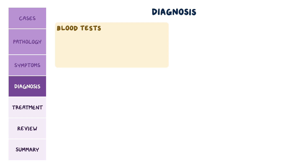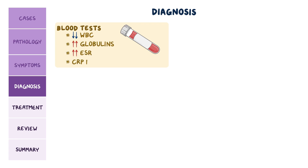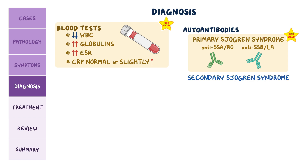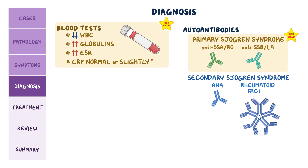Blood tests are also needed for diagnosis. In Sjogren's syndrome, there's often a low white blood cell count, elevated globulins, and an elevated ESR, while CRP might be normal or slightly elevated. Primary Sjogren's syndrome is associated with anti-SSA-Rho and anti-SSB-La, while secondary disease can also present with other antibodies like ANA and rheumatoid factor, depending on the associated autoimmune condition.